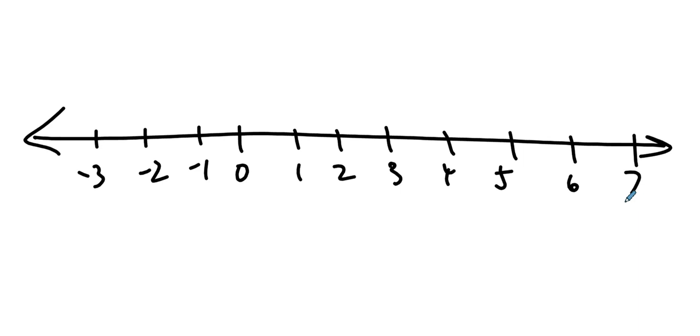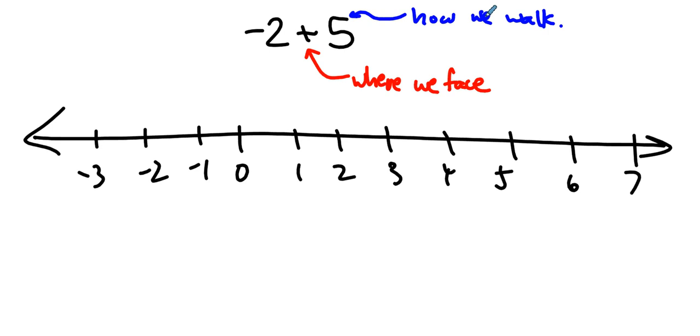So let's imagine that we're going to do -2 + 5. This tells us where we face, and this tells us how we walk. What do I mean? Well, -2, that's our starting point.